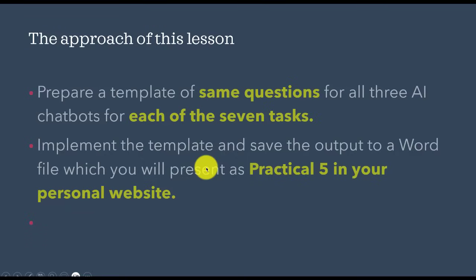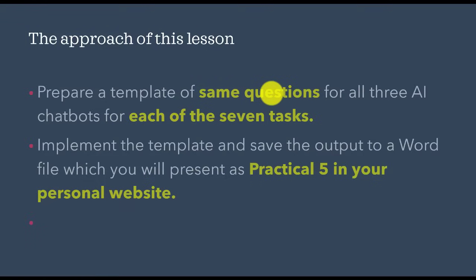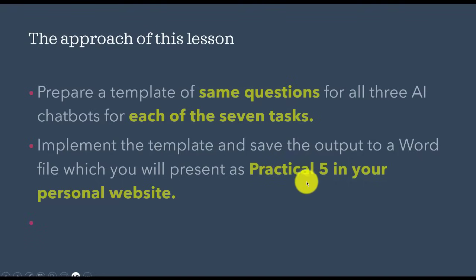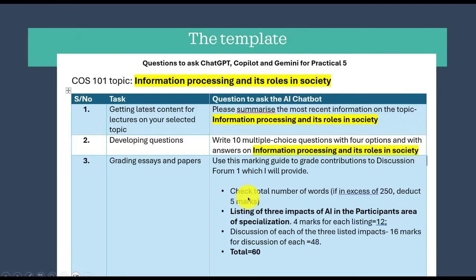My approach in lesson number five is that we are going to prepare a template — the same questions we're going to ask each of those AI tools, just like we did for lesson plans. So we are not going to ask ChatGPT something different from Gemini or different from Copilot. We're going to ask the same questions because what we want to do is compare the performance, then implement the questions one by one.